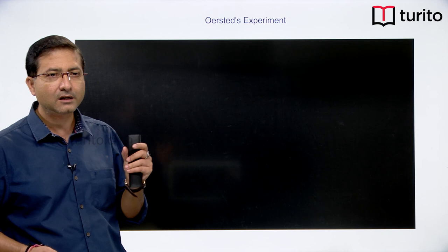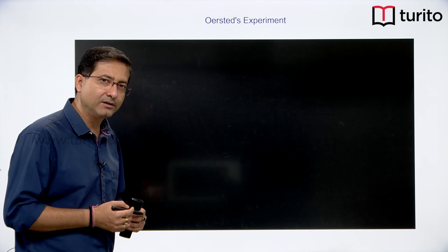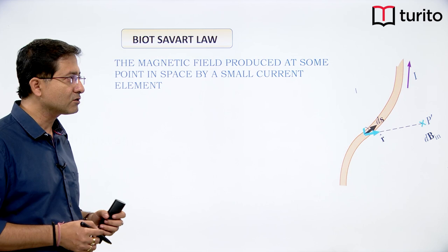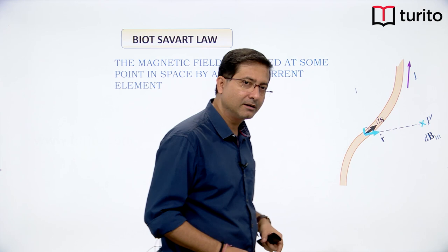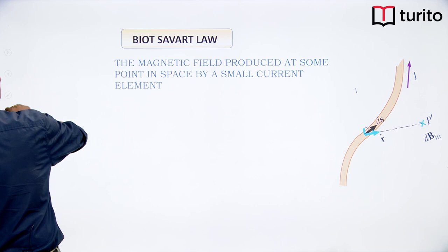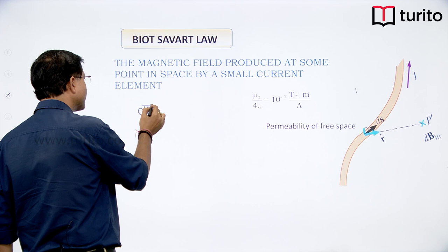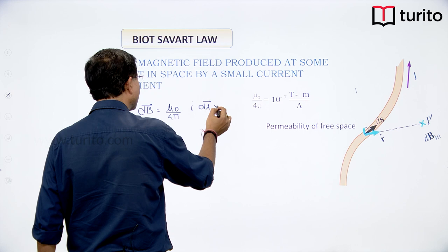If I take a small element on a wire and want to find out the magnetic field at a particular distance from that small part, I need to know Biot-Savart's law. Biot-Savart's law is for small elements. The magnetic field produced at some point by a small current-carrying element is given by dB⃗ = (μ₀/4π) × (I dL⃗ × r⃗) / r³. This is an experimental result.